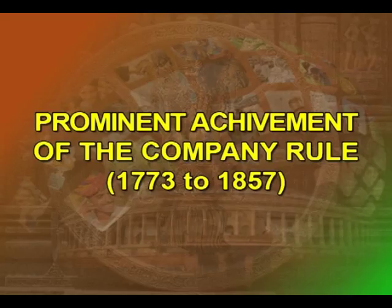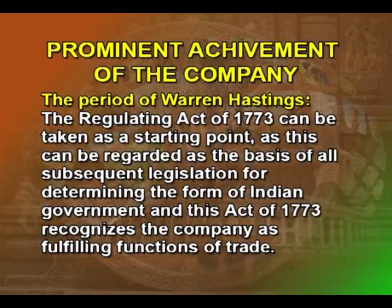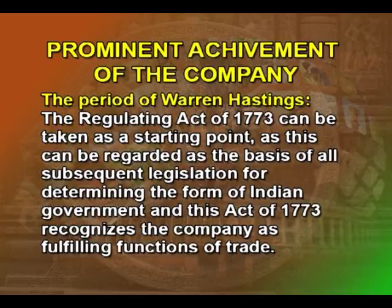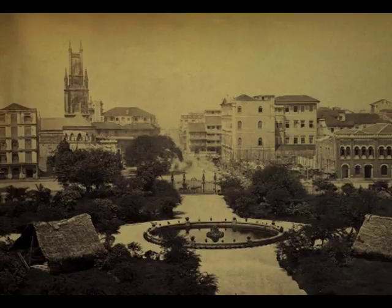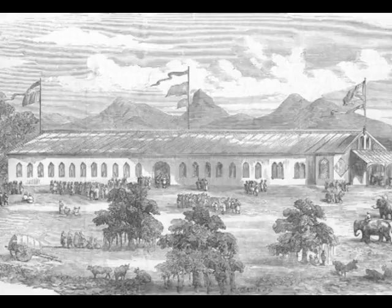The personnel policies differed from one presidency to the other. Prominent achievements of the company rule, 1773 to 1857. The period of Warren Hastings. The Regulating Act of 1773 can be taken as a starting point, as it can be regarded as the basis of all subsequent legislation for determining the form of Indian government. This Act of 1773 recognizes the company as fulfilling functions other than those of trade. It applied chiefly to the Presidency of Bengal. There was a Governor-General and Council controlling the presidencies of Madras and Bombay, and in all cases relating to war and peace, they were obliged to comply with the order of the Governor.